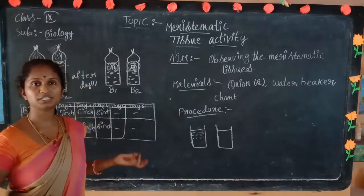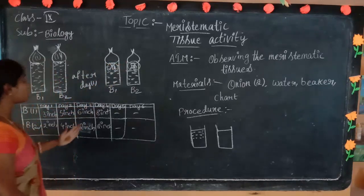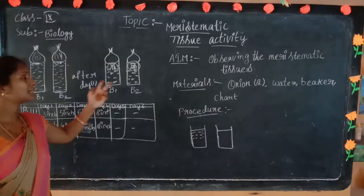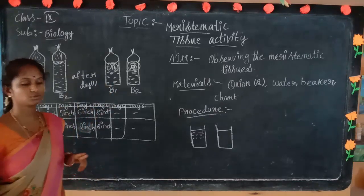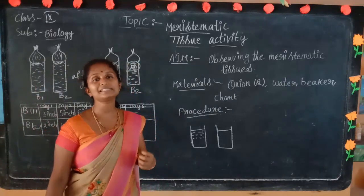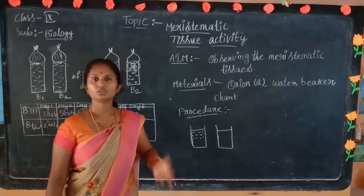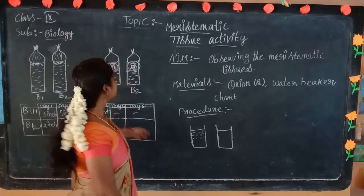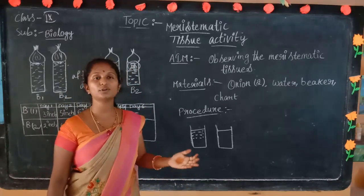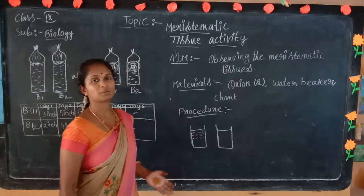Like that, we will observe up to Day 5 or Day 6. What we observe from this activity is: why is the onion in Beaker 2 not growing? Because we cut the meristematic tissues. The meristematic tissues are what help increase the size of the root. If we cut it, it is not possible to increase the size. That is why we observe how much the meristematic tissues are going to be helpful for the roots for growing.